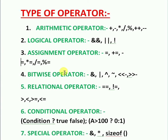Minus-equal-to (-=) is called subtraction assignment — it stores the difference of both operands to the left-side operand. Multiplication-equal-to (*=) is called multiplication assignment — it stores the product of both operands to the left-side operand.